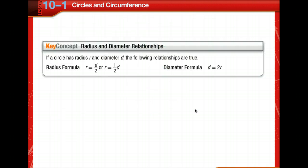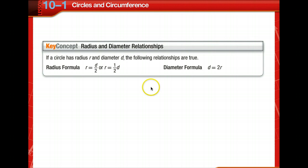By definition, the distance from the center of a circle to any point on the circle is always the same. Therefore, all radii (R) of a circle are congruent. And since a diameter (D) is composed of two radii, all diameters of a circle are also congruent.